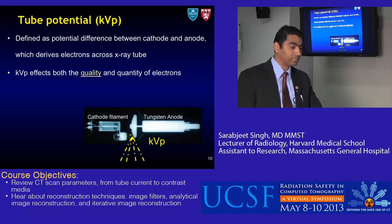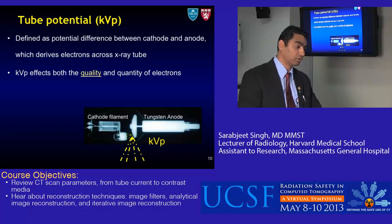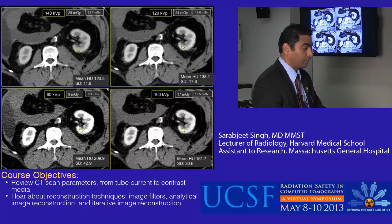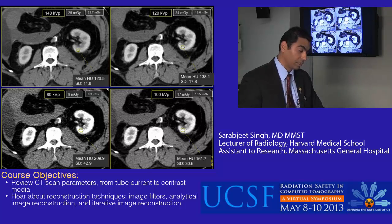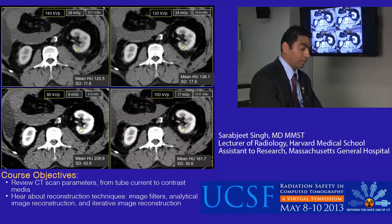Now let's look at tube potential. Tube potential is defined as the potential difference between cathode and anode, which drives the electrons across the x-ray tube. kVp affects both quality and quantity of the x-ray beam — whereas mA affects only the quantity of electrons, tube potential affects both. Here's an example where a post-mortem scan was acquired at different kVps: as we lower kVp from 140 to 120, 100, and 80, image noise goes up, but image contrast also increases at lower kV.